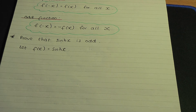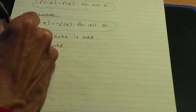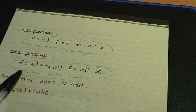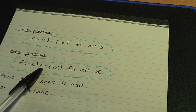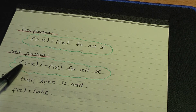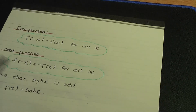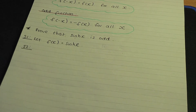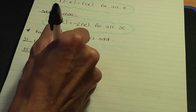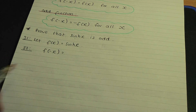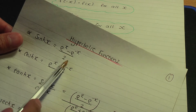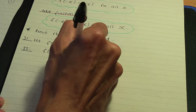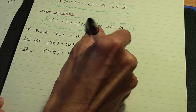In step one, we let f of x equal hyperbolic sin x. In step two, using the definition, I'm going to calculate f of minus x and hopefully we'll end up with minus f of x. We'll start off by calculating f of minus x using the definition of hyperbolic sin. To calculate f of minus x, we're going to replace all of the x's in our definition by minus x. So we're going to have e to the power minus x minus e to the minus of a minus x, all over 2.